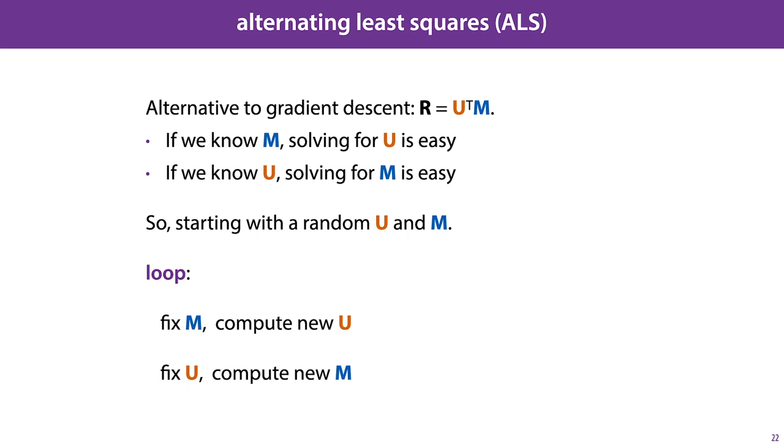So, starting with a random U and a random M, we can enter a loop, fix M and optimize for U, and then fix U and optimize for M. This is known as alternating least squares. ALS has some computational benefits for small datasets, but in practice gradient descent seems to be more flexible.